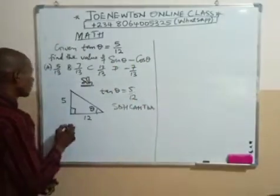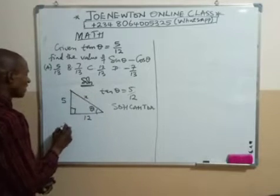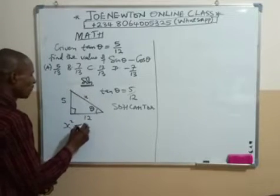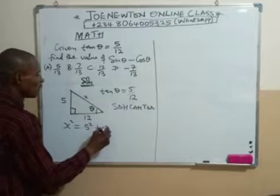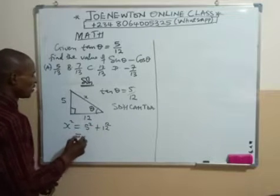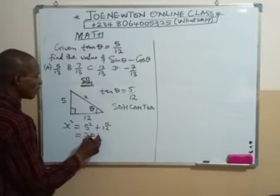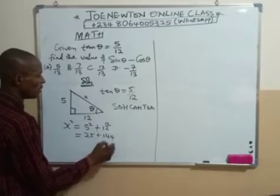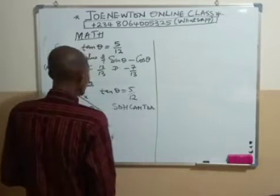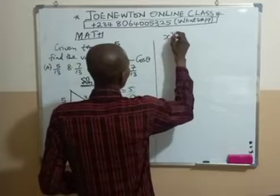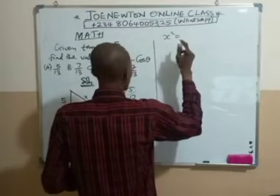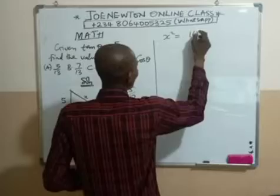We say that the square of the hypotenuse is equal to the sum of the squares of the other two sides. So, let's call this place x. We have that x squared is equal to 5 squared plus 12 squared, which is equal to 25 plus 144.